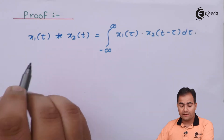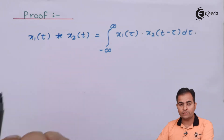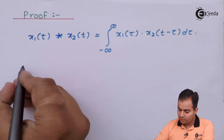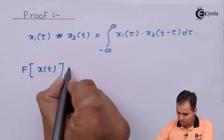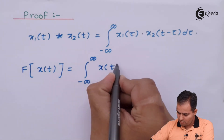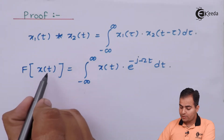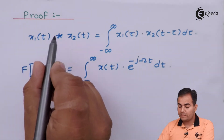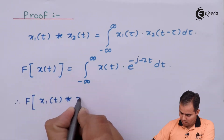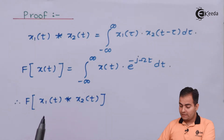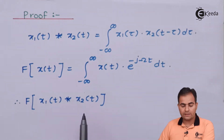We will use the definition of the Fourier transform, in which x(t) is replaced by x1(t) convolved with x2(t). Starting from the definition of the Fourier transform, I am going to substitute the value of x(t) as x1(t) convolved with x2(t). Look here — I have substituted that value.